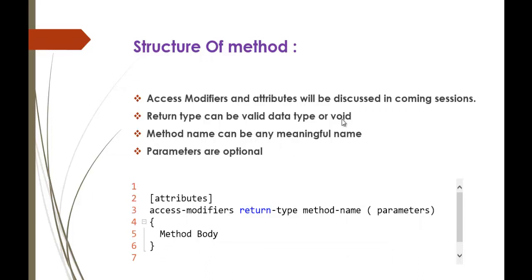Access modifiers and attributes will be discussed in the coming sessions. For example, access modifiers include public, private, protected, and internal protected. We also have return type, which can be any valid data type. If you don't want to return anything, you can use the void keyword. Method name can be any meaningful name you choose, and parameters are optional — you pass them wherever they are required.